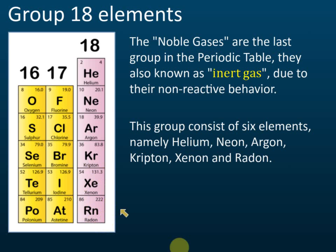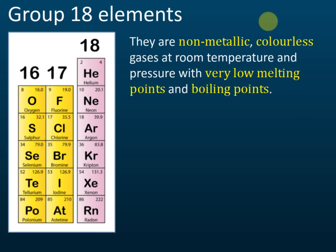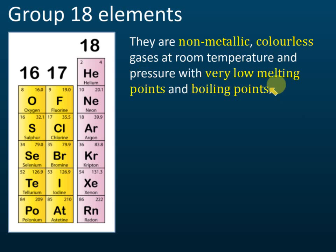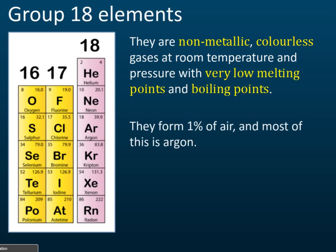Group 18 elements are non-metals. They are colorless at room temperature and have very low melting points and boiling points, and therefore they are all gases. They form about one percent of the air in the atmosphere, and most of that is argon.